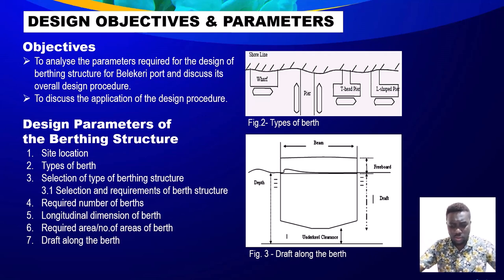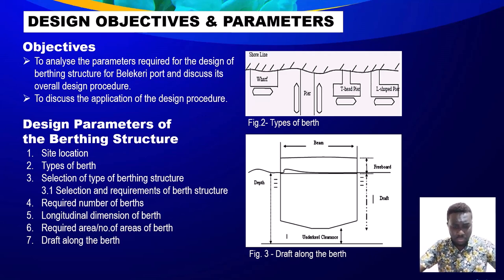Third is the selection of the type of berth structure. The type and material to be used will depend on factors like material availability, the construction cost, the method of construction, and the dimensions and mass of ships handled at the port. Other parameters may also include the required number of berths, longitudinal dimensions, the required area, as well as the draft along the berth, as you can see in Figure 3, which represents the draft consisting of freeboard, beam, and consideration of the depth.